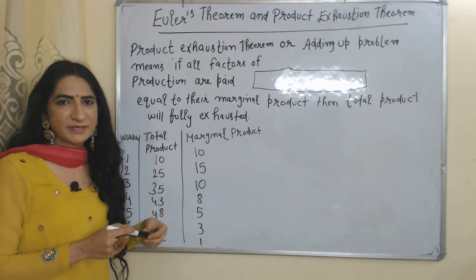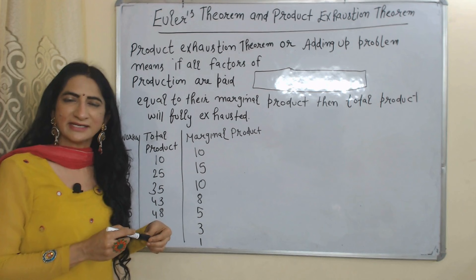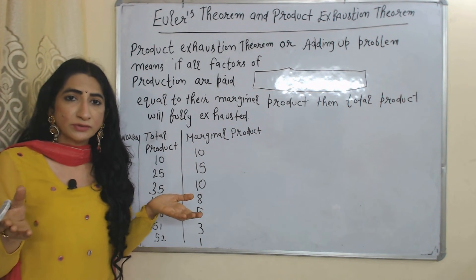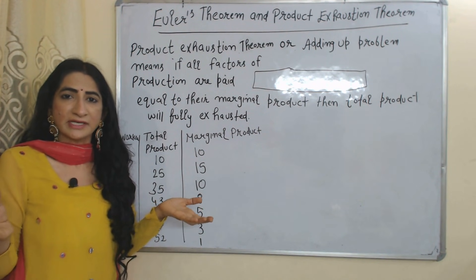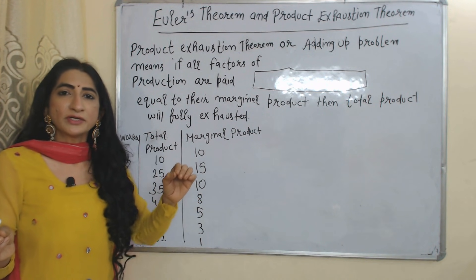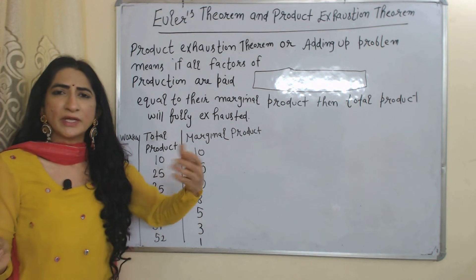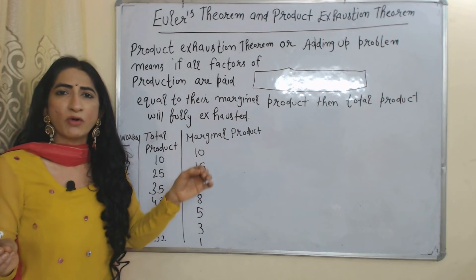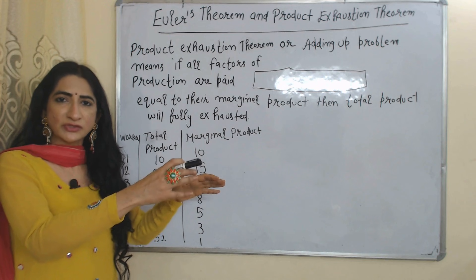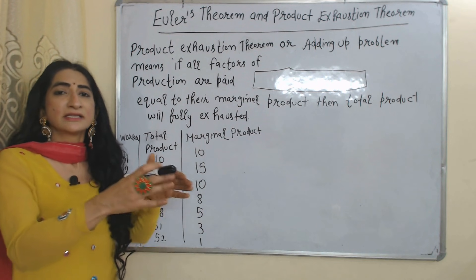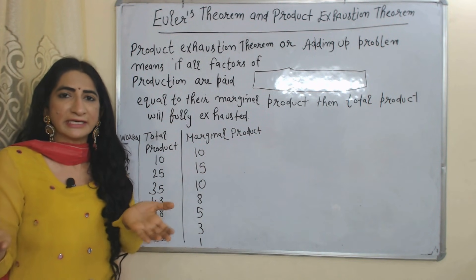Hello everyone, my name is Mini Sati. I hope you all are staying healthy. Today we are going to talk about Euler's theorem and the Product Exhaustion Theorem. According to the Product Exhaustion Theorem, also called the Adding-Up Problem, when all factors of production are paid equal to their marginal product, then total product will be fully exhausted.